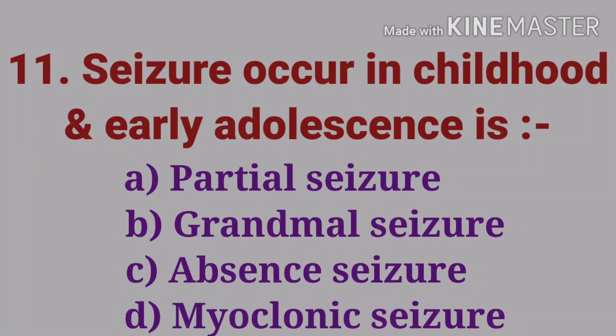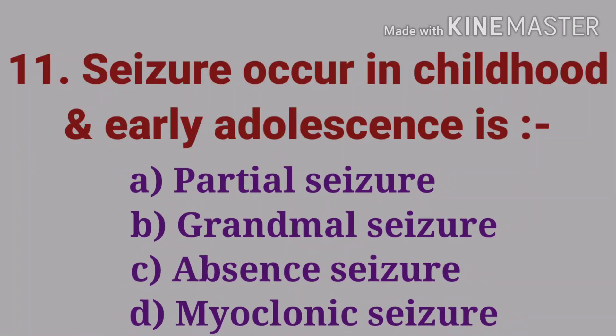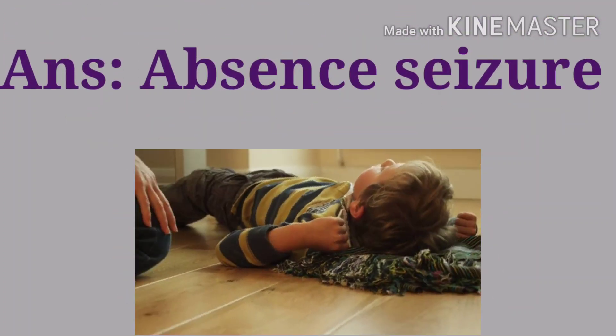The eleventh question: seizure occurring in childhood and early adolescence — options are partial seizure, grand mal seizure, absence seizure, and myoclonic seizure. The answer is absence seizure.